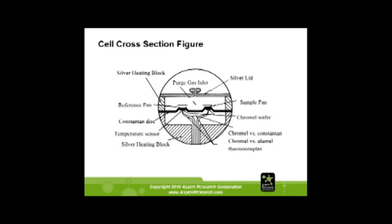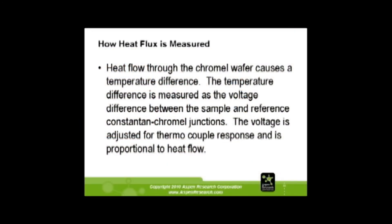Here's a cross-section of the block. This is where the reference pan sits, and here's the sample pan. You have a Constantan disc that runs underneath the entire platform, and you have chromel wafers that come up underneath here. When you're filling this pan up with sample, you want this pan to weigh about the same. That saves you from a large start-up spike — you'll get a large start-up spike if the samples are not equal. You just take DSC pans and cut the bottoms off, then stick them inside the DSC pan to match the weight, and you won't get a very large start-up spike. Sometimes that start-up spike almost looks like a transition if you don't do that. Heat flux is measured as heat flows through the chromel wafer causing a temperature difference. The temperature difference is measured as voltage, which is adjusted through the thermocouple response and is proportional to the heat flow.